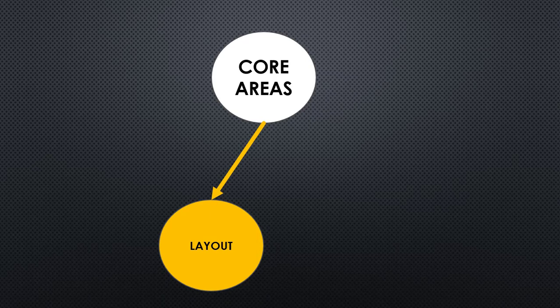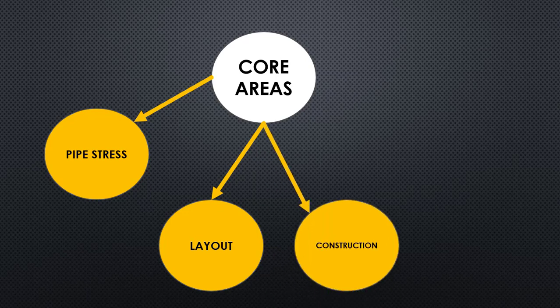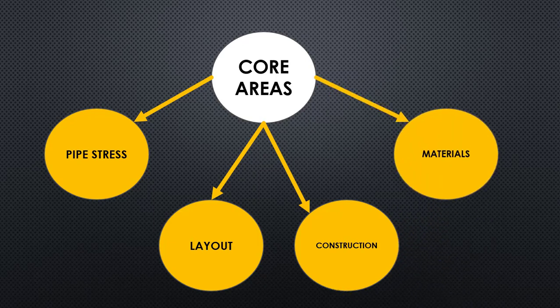In the core area, you must know about piping layouts — the different configurations of piping layouts and guidelines. The second important thing is pipe stress analysis; you should know its fundamentals. The third is construction — you must know about constructability, as only then you will be able to design the piping system. The fourth is piping material — you must know about the different MOCs and different piping materials used in various services.